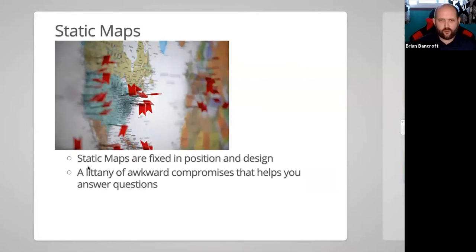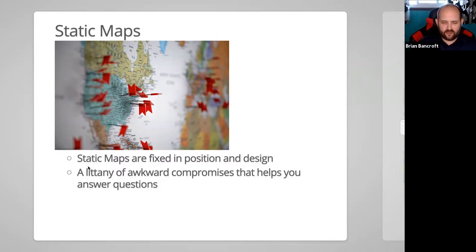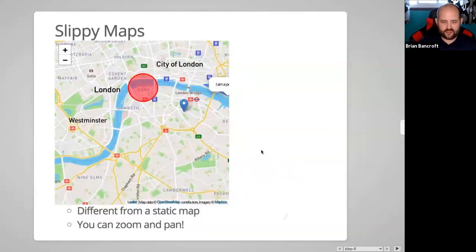Most people are aware of static maps — they're maps you can't pan or zoom. They just sit on a piece of paper or screen as an image, meant for one zoom level at one area. They're full of compromises: you're trying to present a lot of information for as many people as possible. There's no perfect way to do a static map, but they've been around a long time.